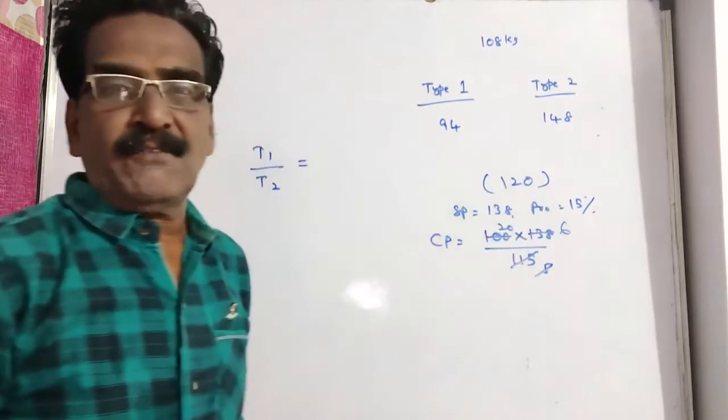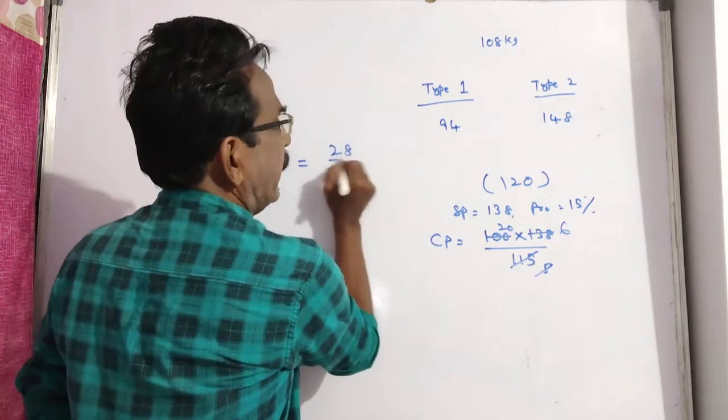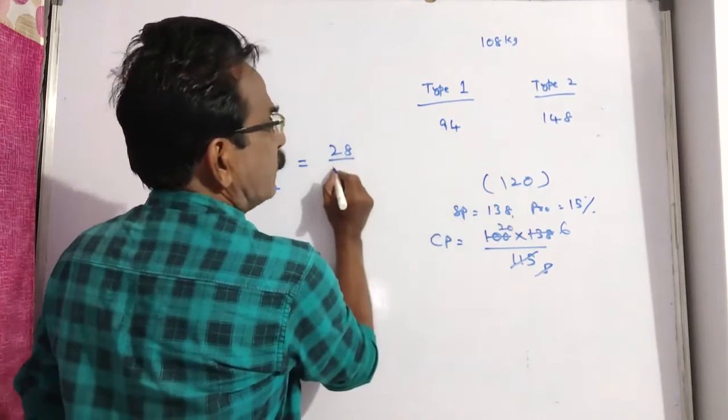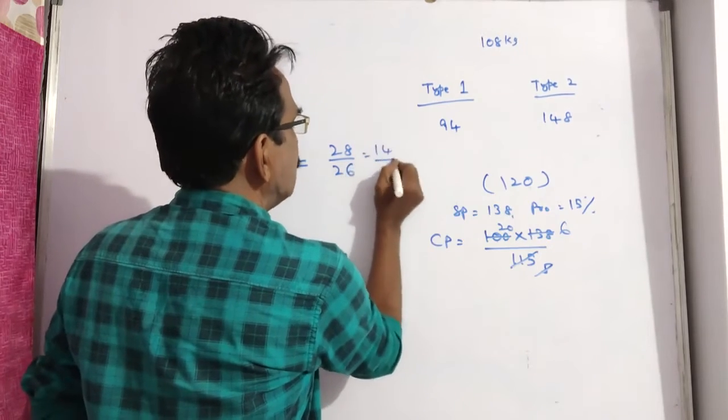So mean price is 120. Now the required ratio is this minus this, 28, by this minus this, 26. 28 to 26 is 14 to 13.